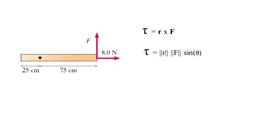So we change from centimeters to meters. This is R, the vector R. And F is the red vector, 8N.